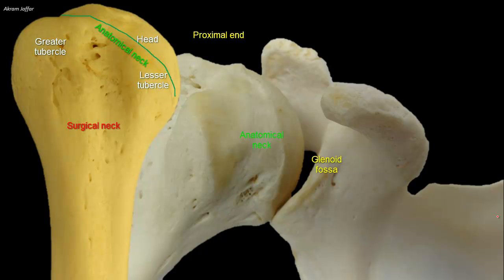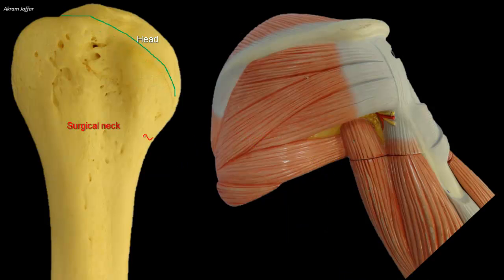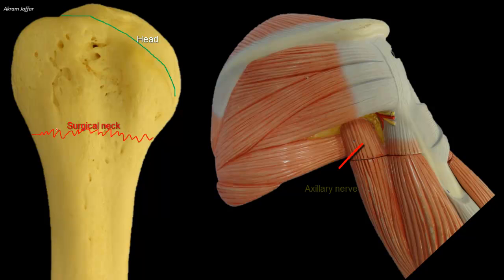The surgical neck is the narrow part located at the junction of the expanded upper end and the shaft. The surgical neck is a common site of fracture, hence the name. The axillary nerve winds around behind the surgical neck, accompanied by the posterior circumflex humeral vessels.